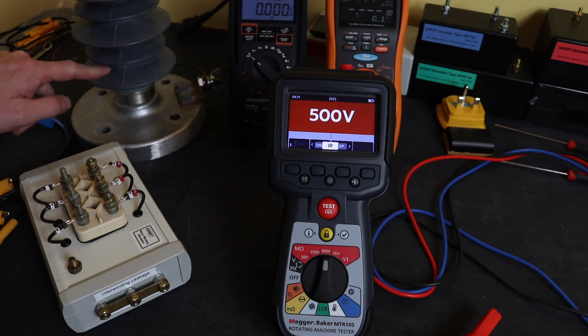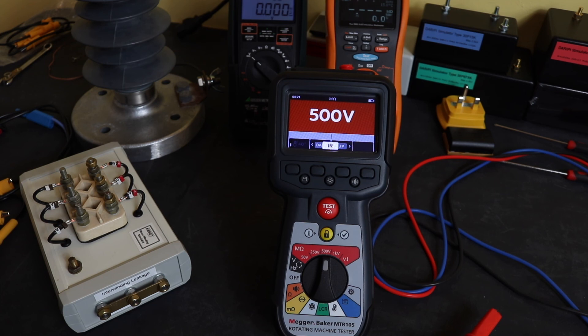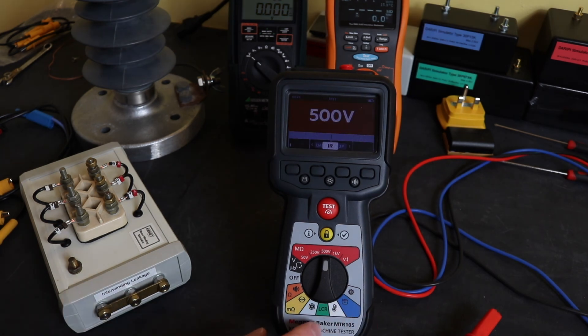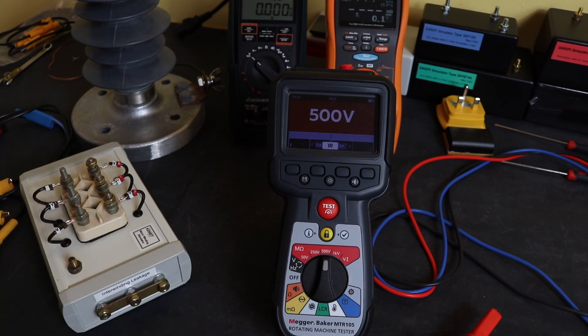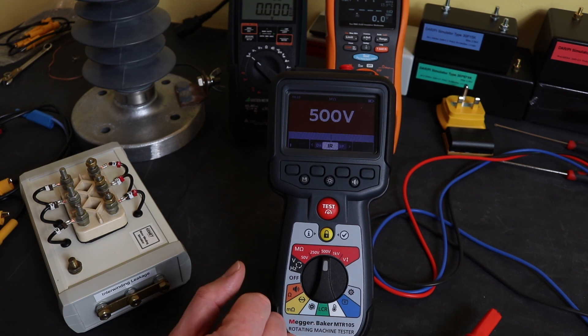This bushing is to simulate a bushing test using a guard terminal. Only the MTR105 has a guard terminal on it. Neither the Metrel CoilTest nor Keysight U1461A have guard terminals, so they're going to sit out this video and we'll just concentrate on the MTR105.